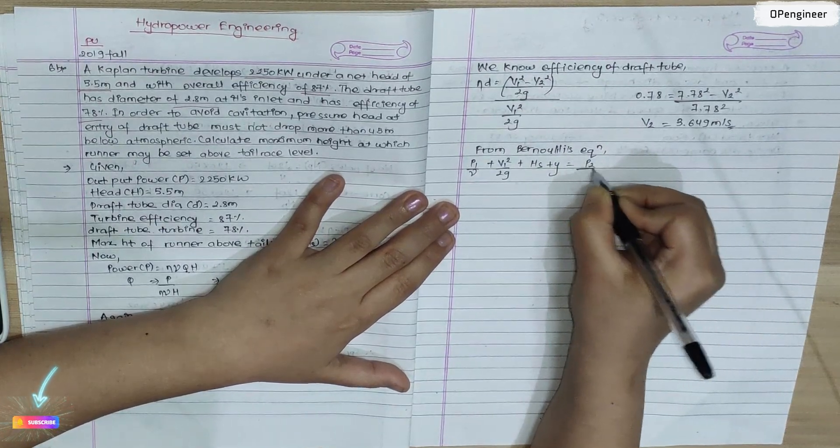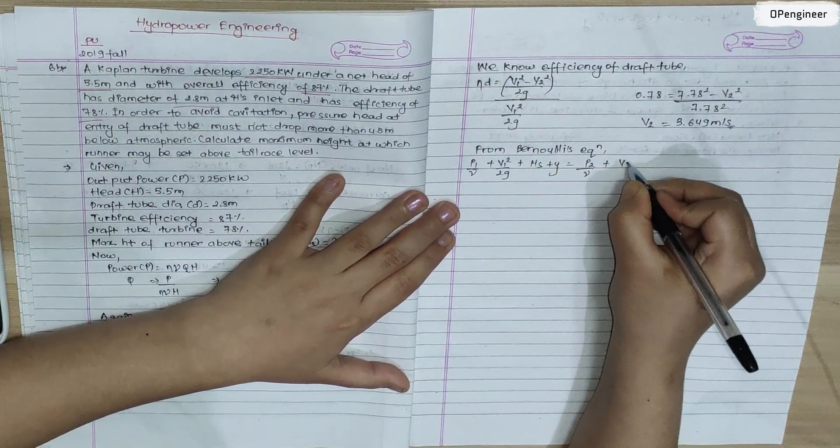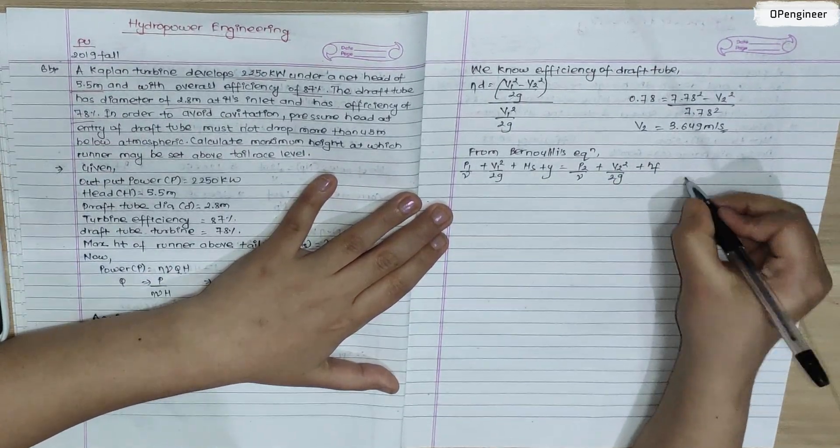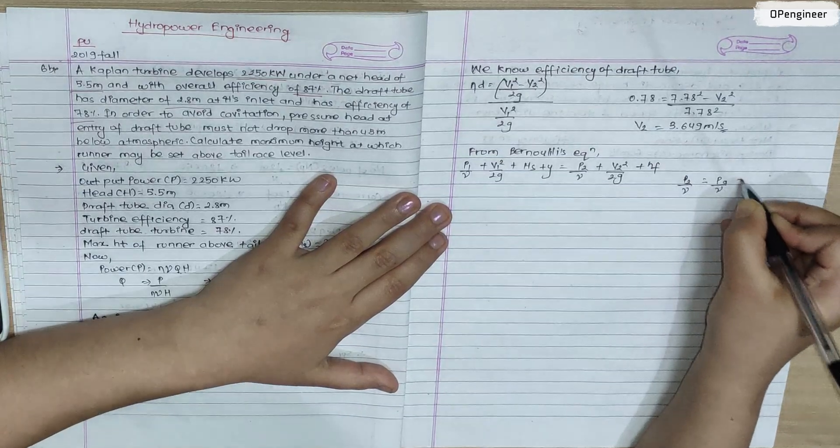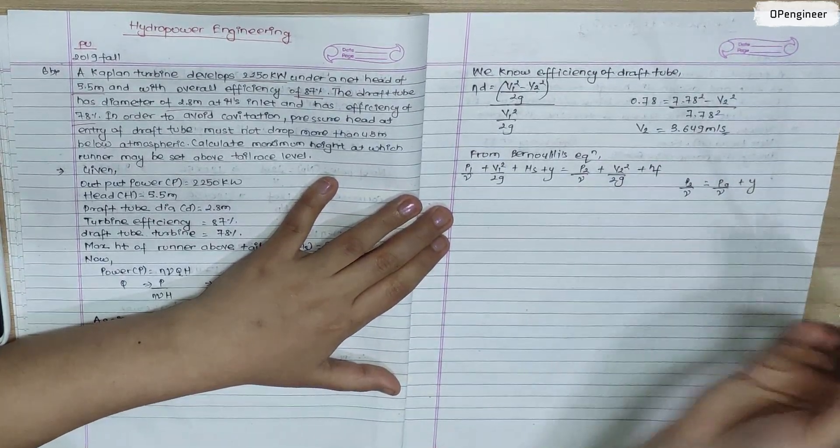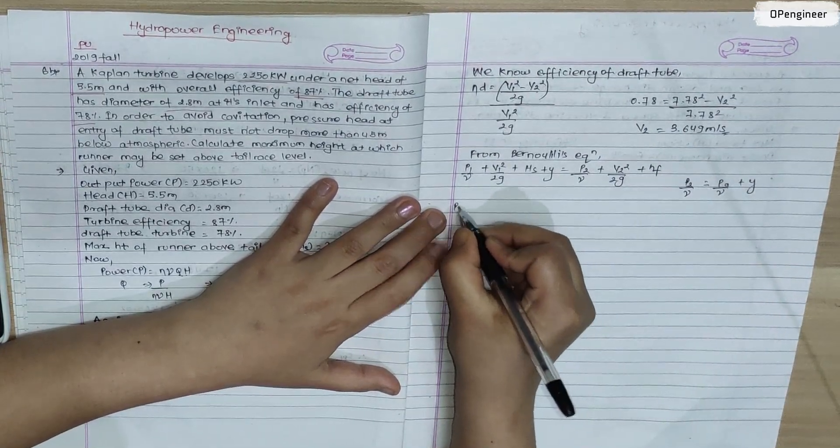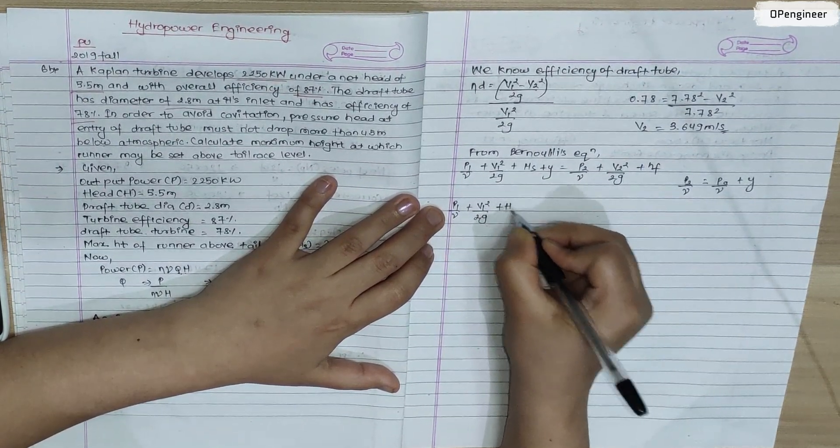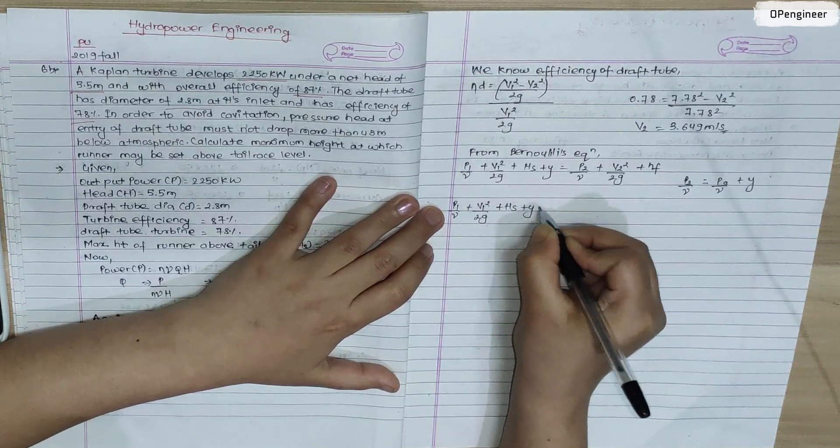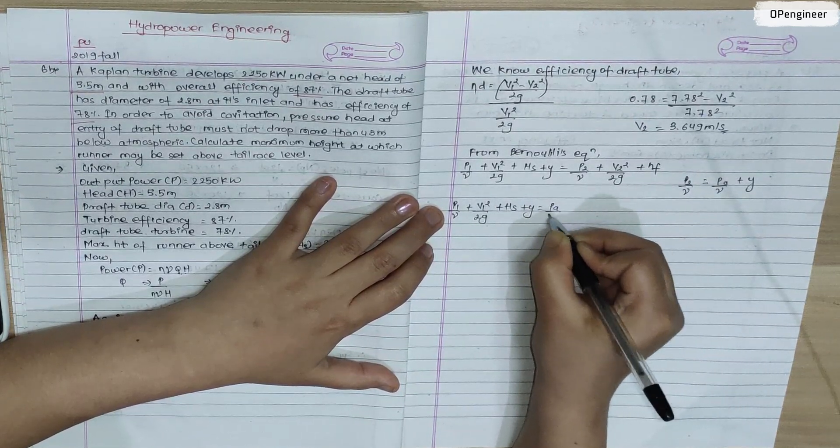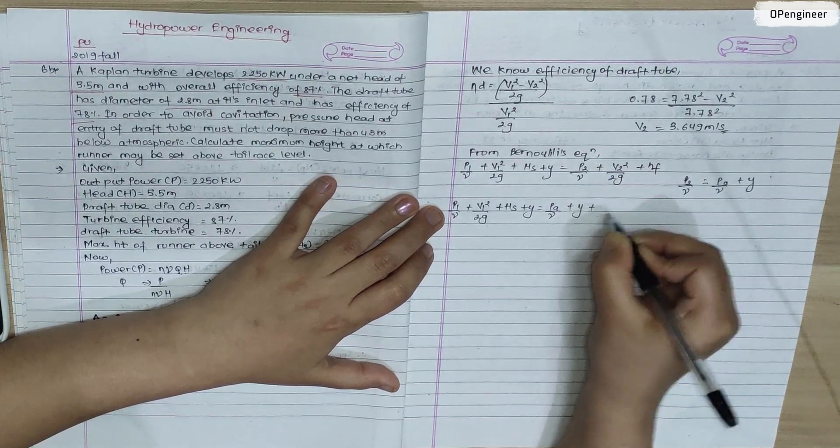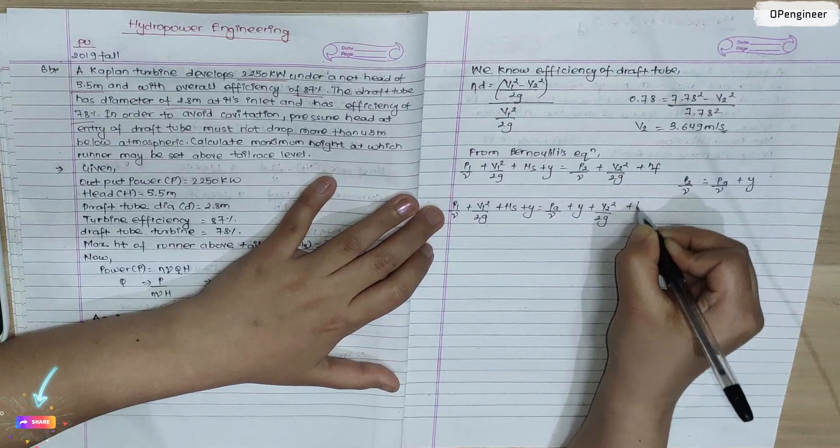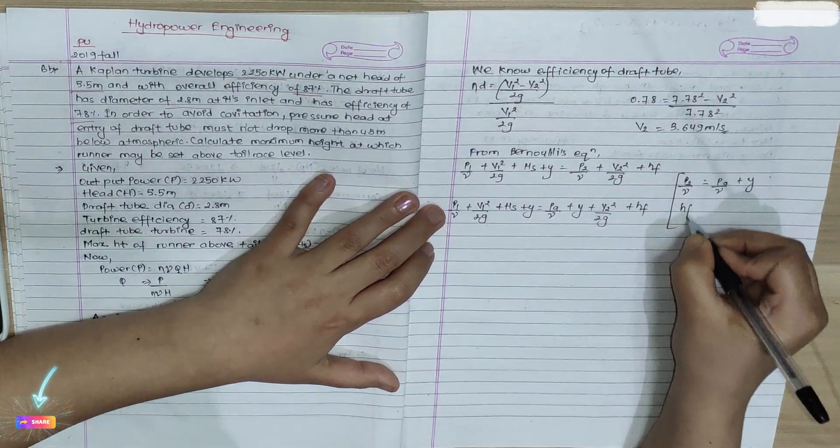P2/γ is replaced by Pa/γ + Yt. So the equation becomes: P1/γ + V1²/2g + Y = Pa/γ + Yt + V2²/2g + Yf. We need to find Yf.